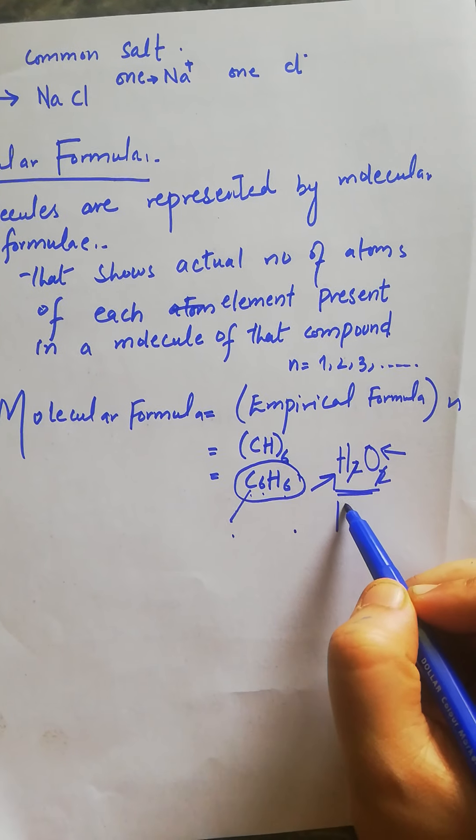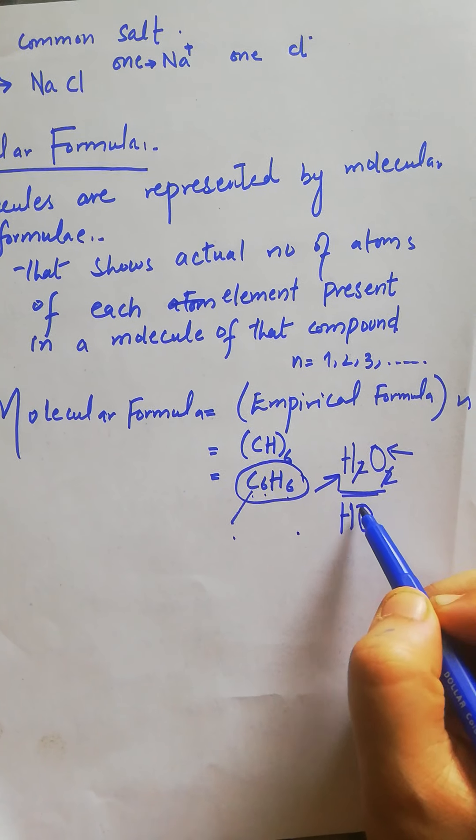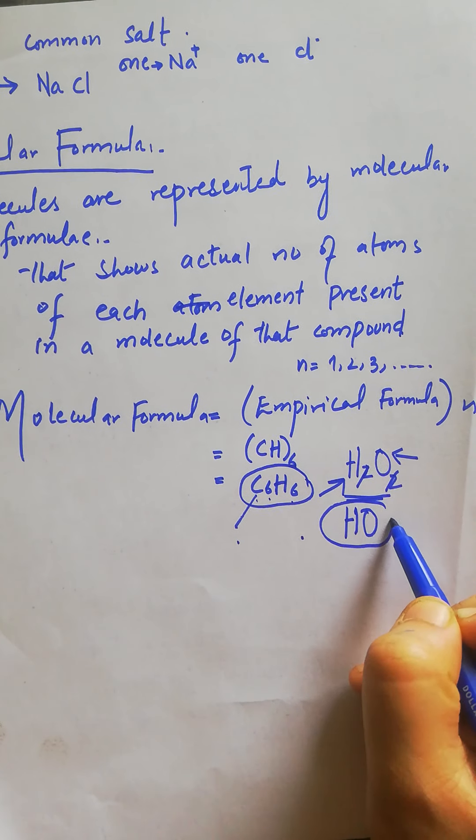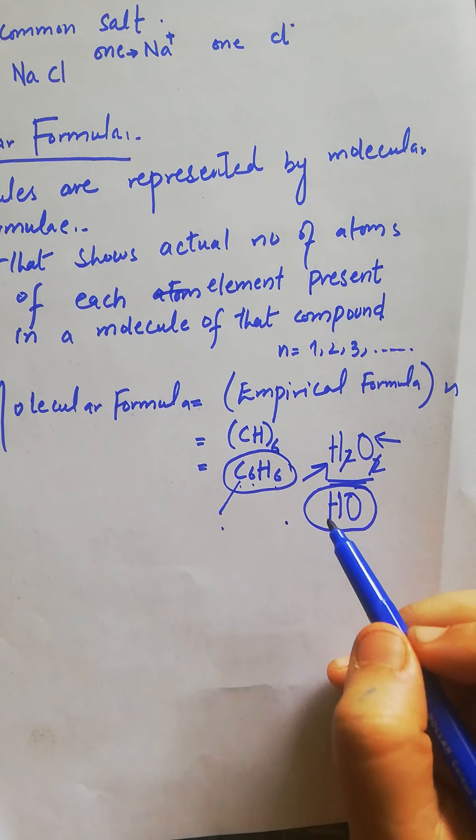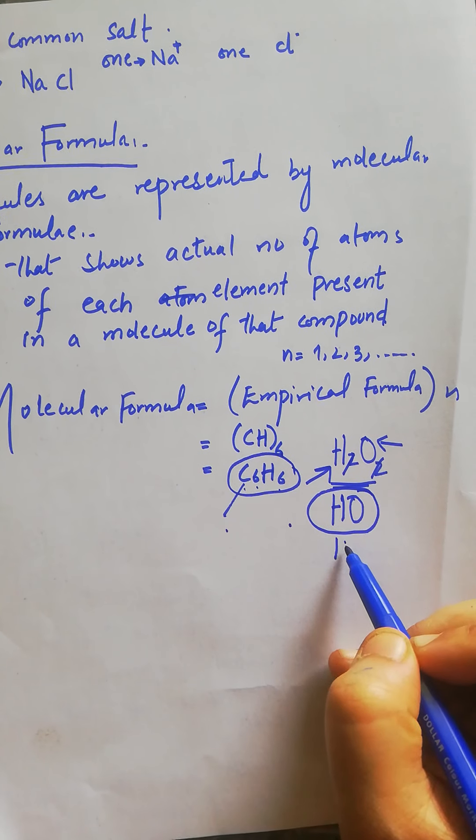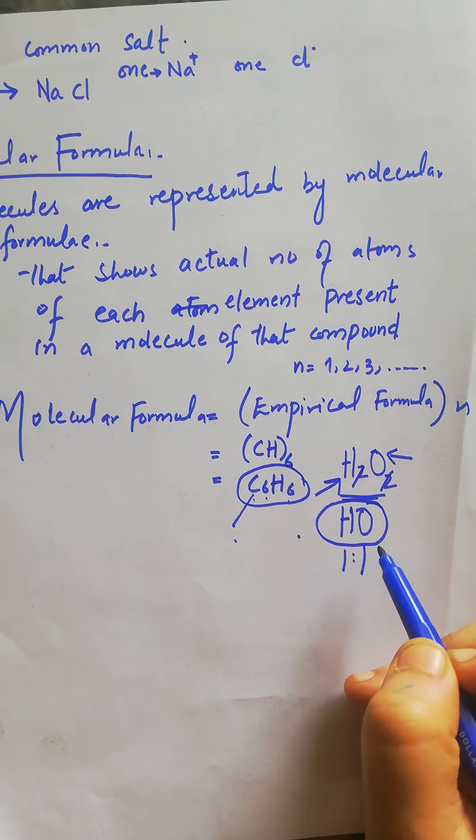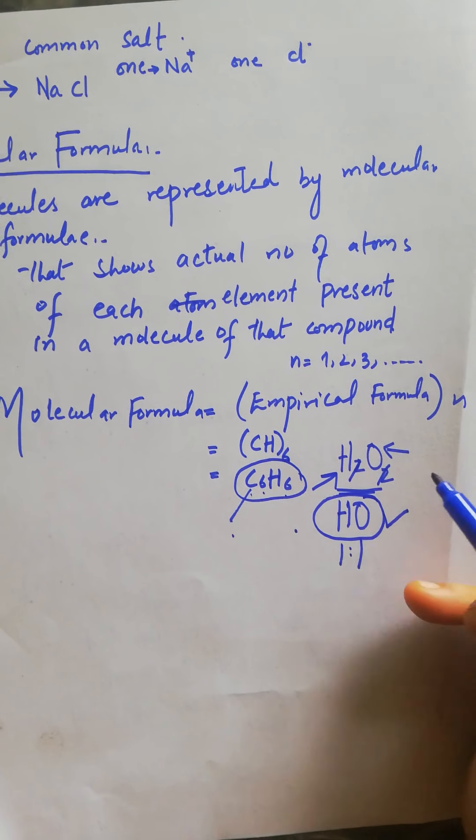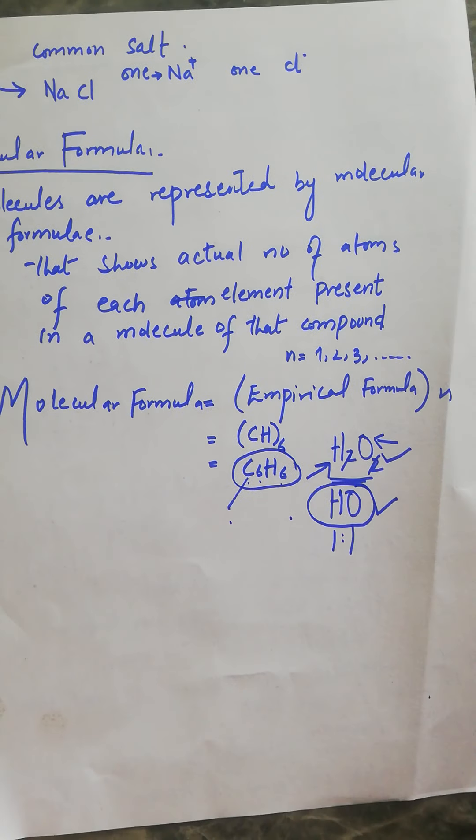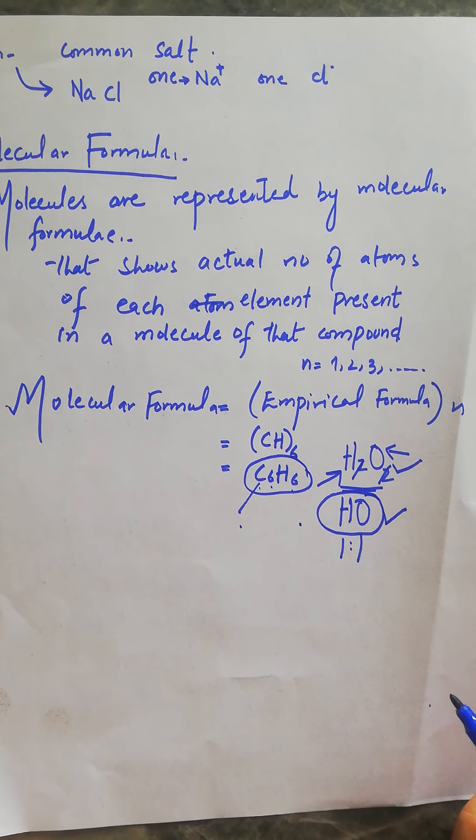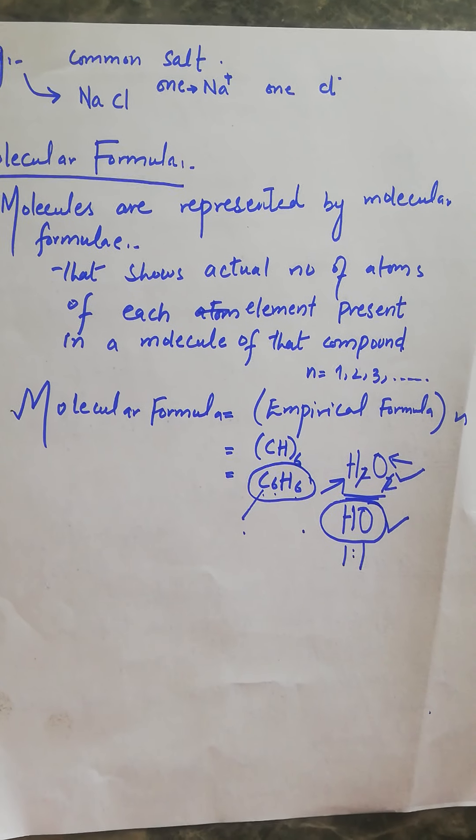If I ask you what the simplest formula or empirical formula would be, we divide by 2 and get HO. This formula shows the simplest whole number ratio: hydrogen 1 and oxygen 1. This is the empirical formula, and the other is the molecular formula. Hopefully this is clear. Thank you so much.